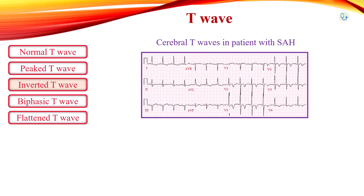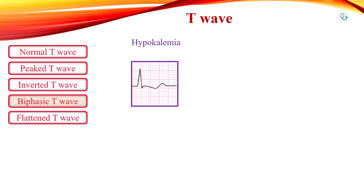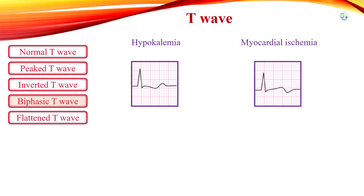Combined positive and negative T-waves in the same lead are called biphasic T-waves. The two main causes are hypokalemia and myocardial ischemia. In hypokalemia, an initial negative deflection is followed by a terminal positive deflection. In myocardial ischemia, biphasic T-waves may present as an initial positive deflection followed by a terminal negative deflection.